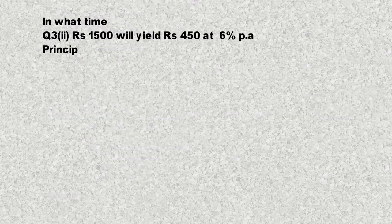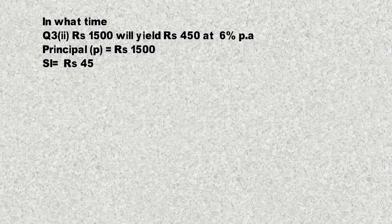Exercise 7D, Question number 3, Part number 2. In what time will rupees 1500 yield rupees 450 at 6% per annum? 1500 روپیہ، 6% interest per annum کے حساب سے، کتنے سالوں میں 450 روپیہ generate کرے گا؟